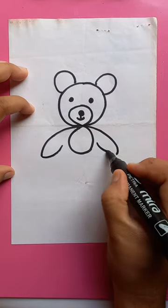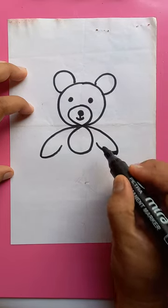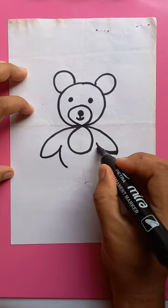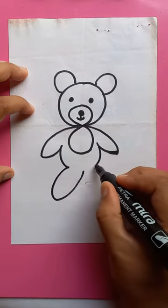Connect it like this, like your wings. Okay, then draw like this. For the legs, you can draw like this.